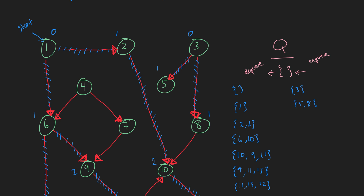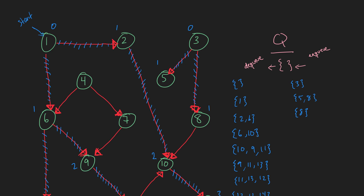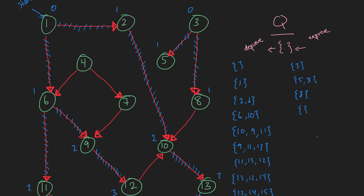When we dequeue 5, it has no adjacency list — it's empty. Then we dequeue 8 and the queue is empty. We've finished our search from node 3.